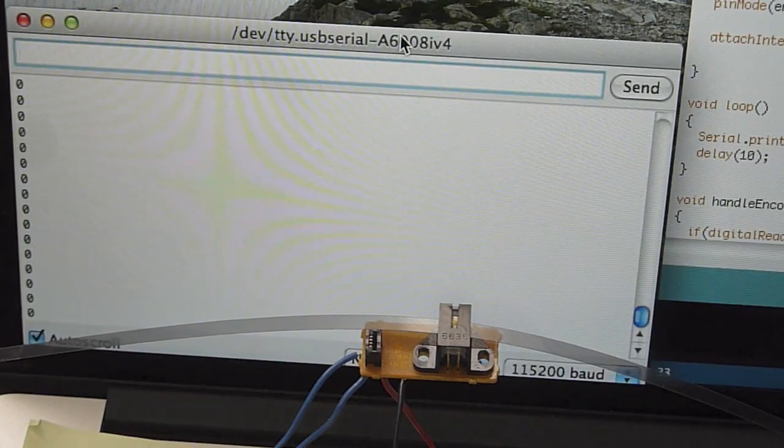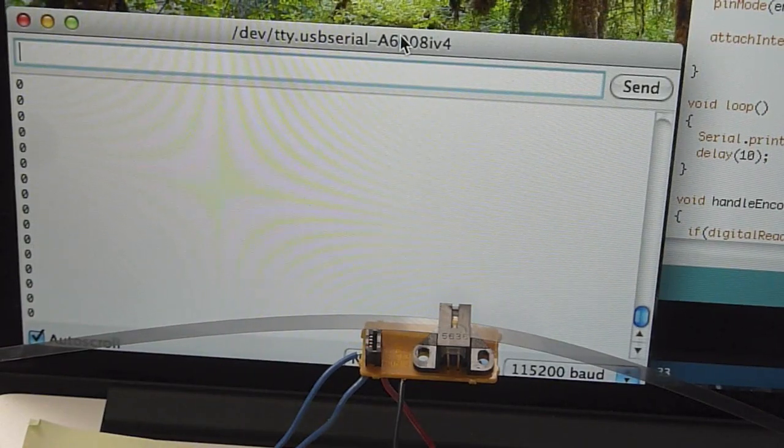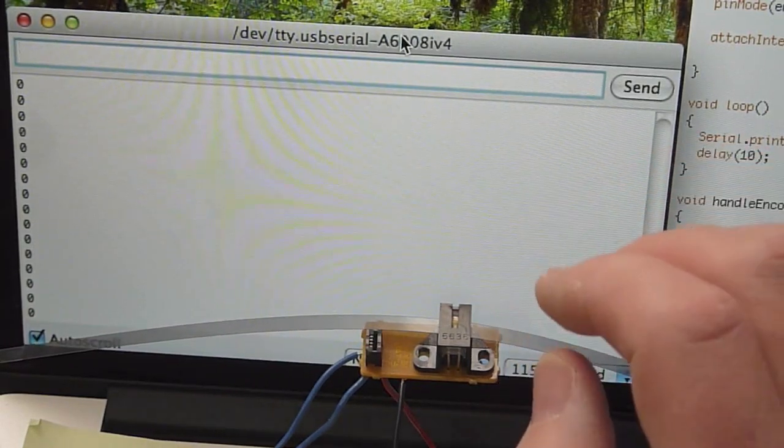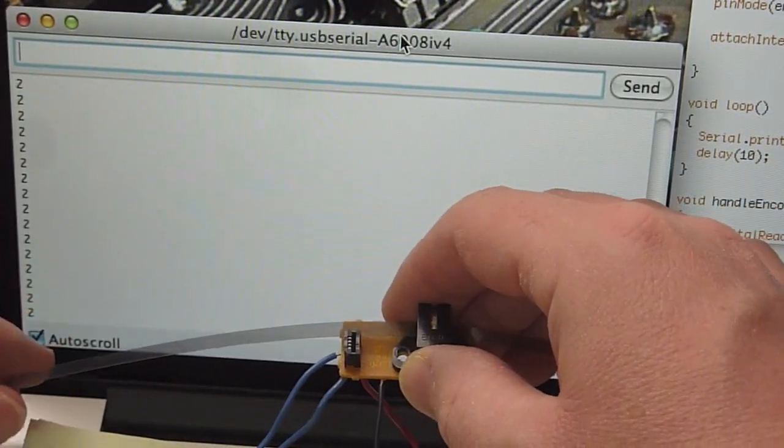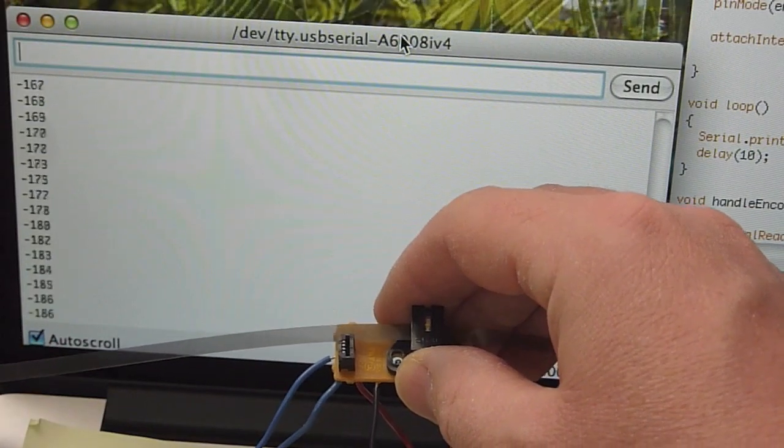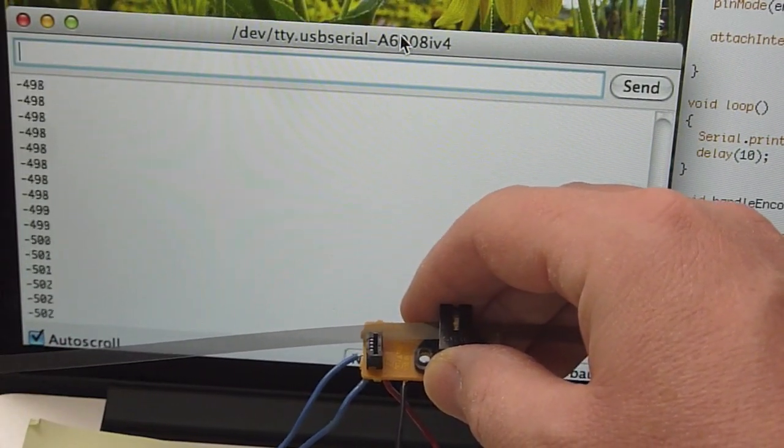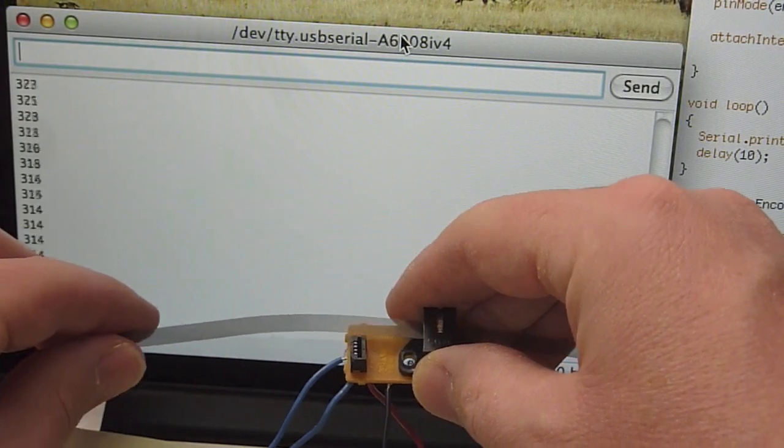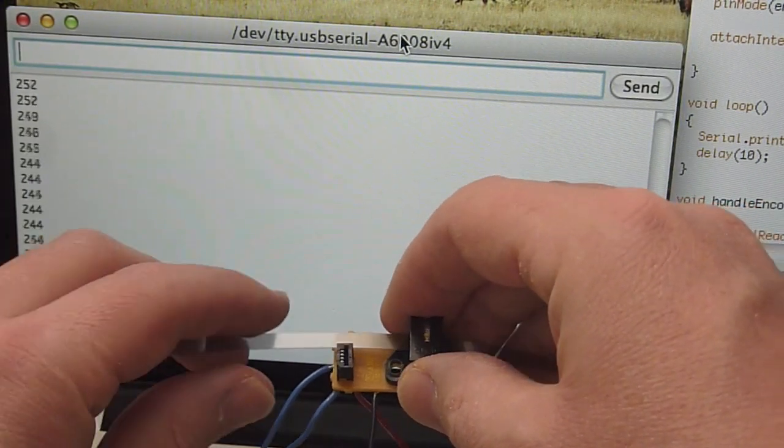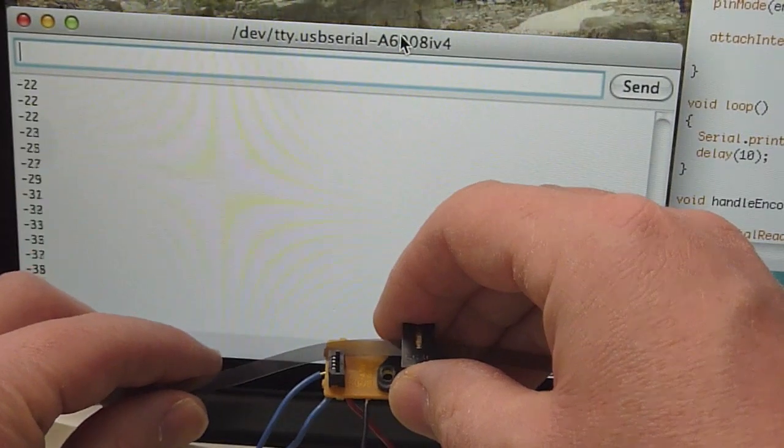Okay, so we've got our encoder strip inside of our little photo interrupter and I've got it hooked up to the Arduino and it's hooked up to the code and it's running. And I'm just going to slide the strip back and forth. It's a little hard to do while I operate the camera. So I slide to the left, the numbers become negative. I slide to the right, the numbers become positive. And I need to keep the strip kind of centered in the photo interrupter.